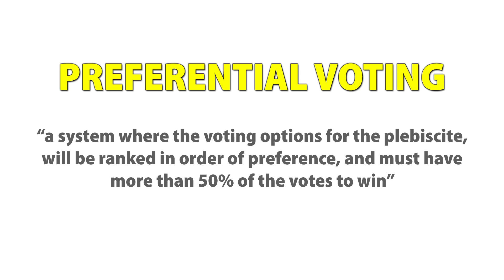The winning option must have more than 50% of the votes. If there isn't a clear winner after the first count, the ballots are redistributed. The system with the lowest amount of votes is excluded, and its secondary choices are redistributed.